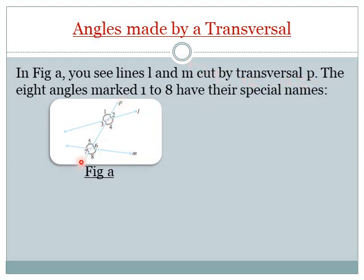Now, two parallel lines L and M are cut by transversal P. The 8 angles marked 1 to 8 — see how many angles are here: angle 1, angle 2, angle 3, angle 4, angle 5, angle 6, angle 7, angle 8. These 8 angles have their special names.